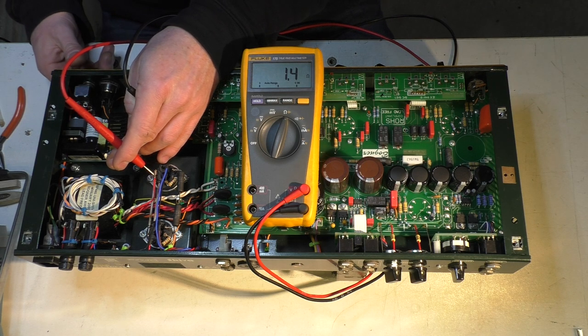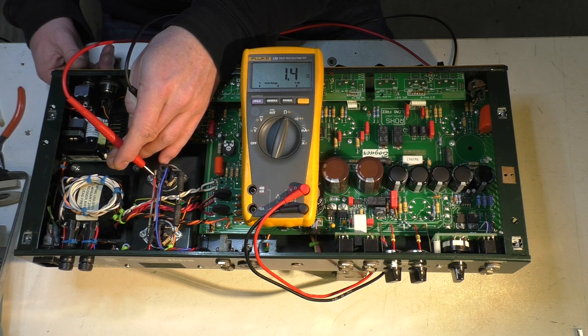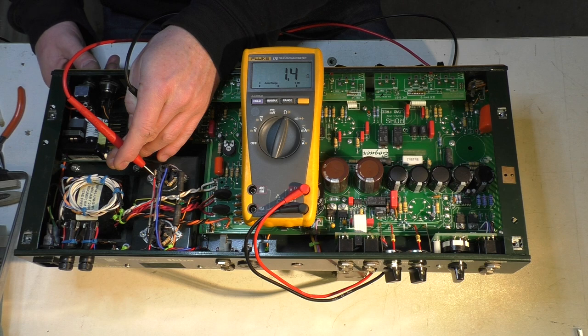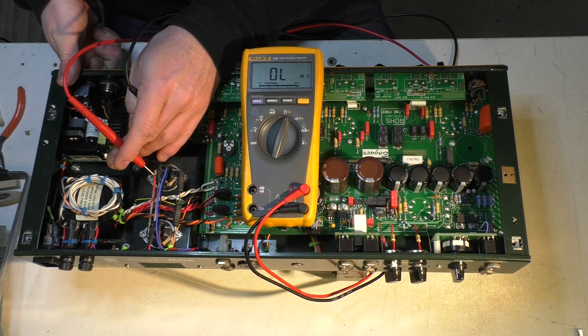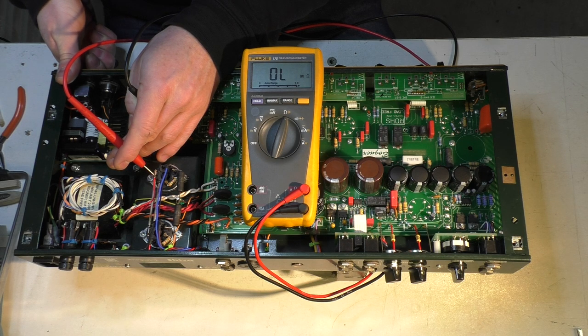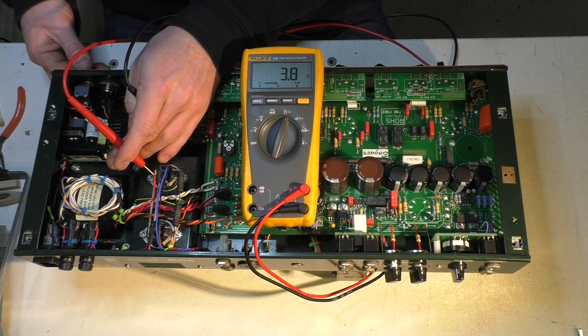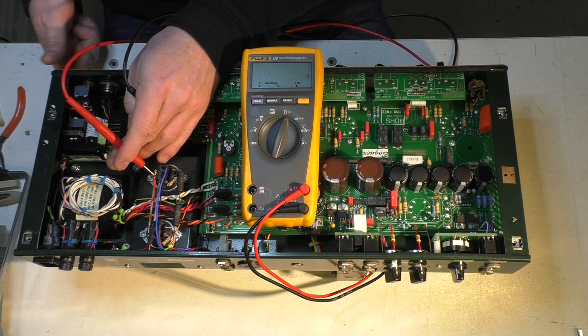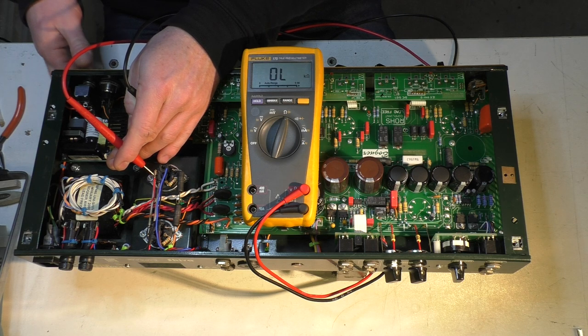It says Mexico, so it's probably a Carling switch, which is good because they're quality. But this thing's switching off DC, so switches always get a bit more punished by DC than they do with AC, because it doesn't naturally break the arc like an AC voltage does.